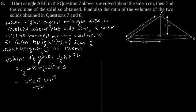Therefore, the volume of the solid obtained when triangle ABC is revolved about the 5 cm side is 240π cubic centimeters.